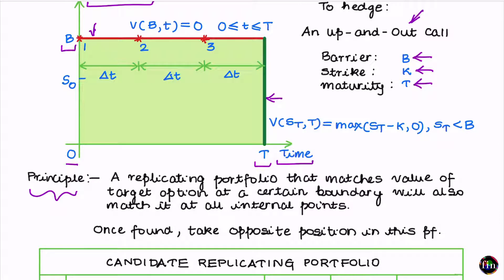Step one is to locate a replicating portfolio for my target option which matches the value of the target option on a pre-decided boundary — in this case, the red and green boundaries. This replicating portfolio will also match the value of the option in the entire interior green region. Once you have your replicating portfolio, hedging your target option is about taking a position in the replicating portfolio that is opposite to the position in your target option.